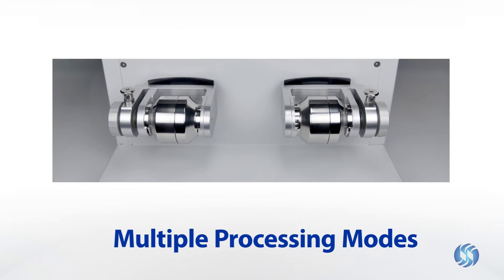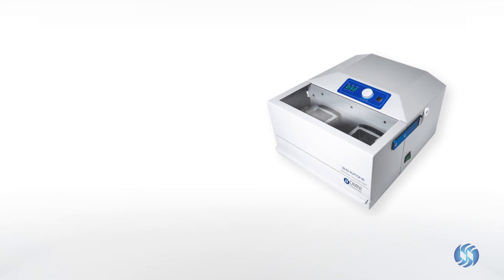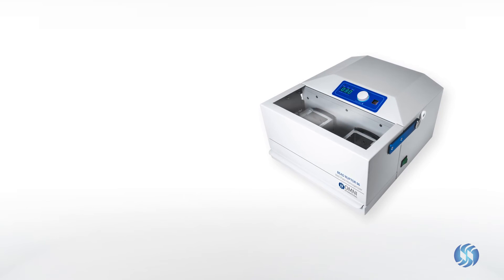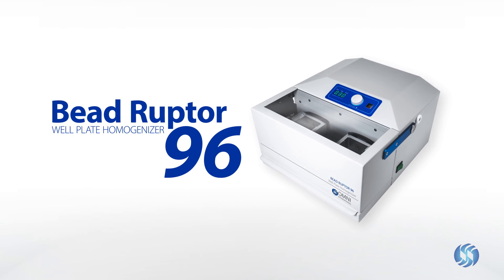With multiple processing modes and a wide range of bead mill accessories, the Beadruptor 96 is an ideal homogenizing solution for laboratories requiring high throughput processing and milling capabilities in a single device.